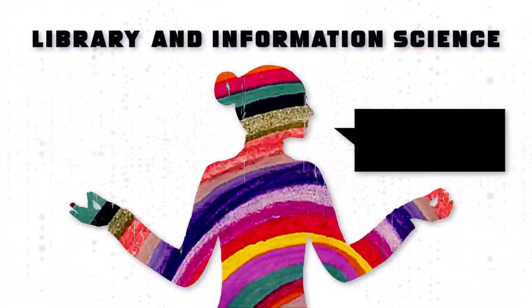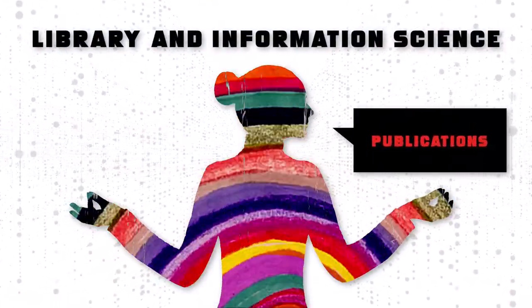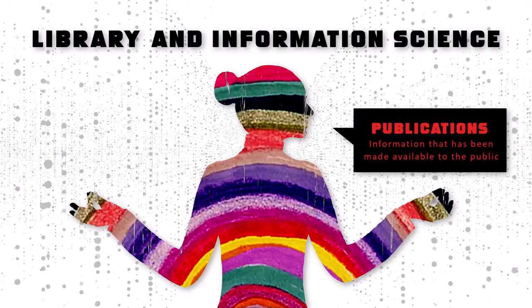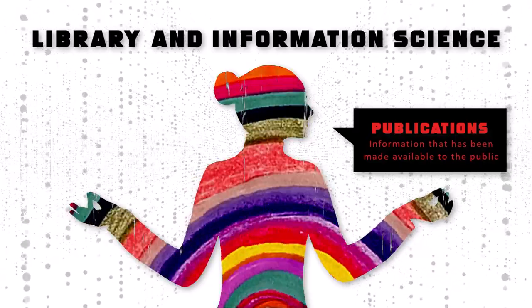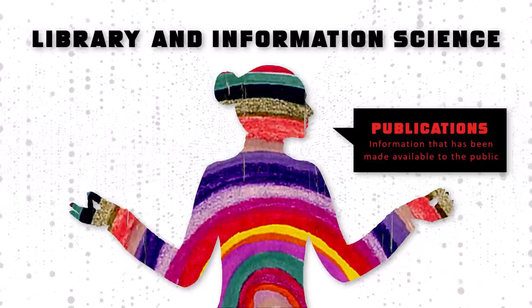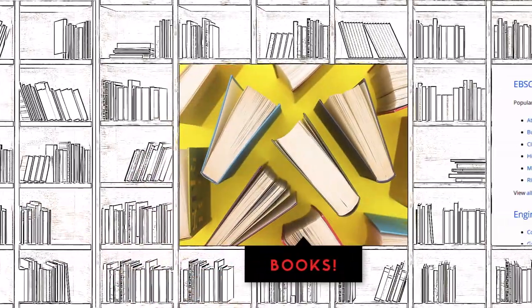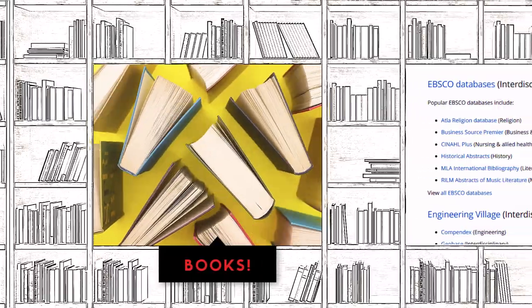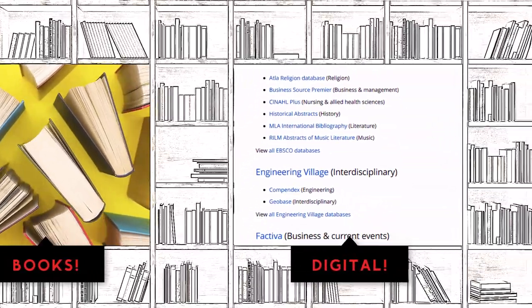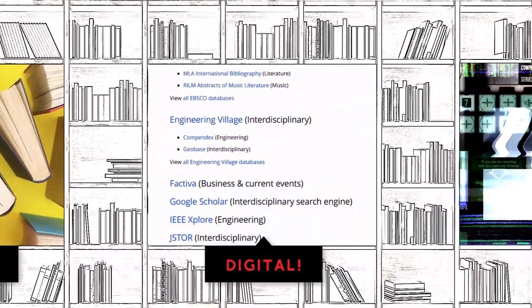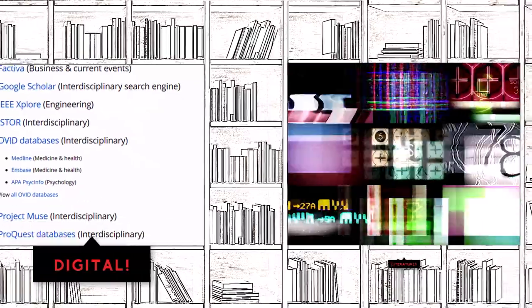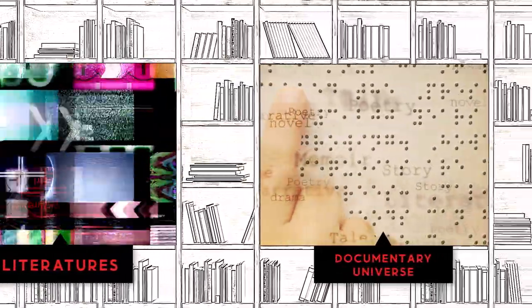On the one hand, Library and Information Science is concerned with publications — that is, information that has been made available to the public. In the past, this meant books. But nowadays, there are many different forms of print and digital publications. Altogether, they are sometimes called literatures, or the documentary universe.